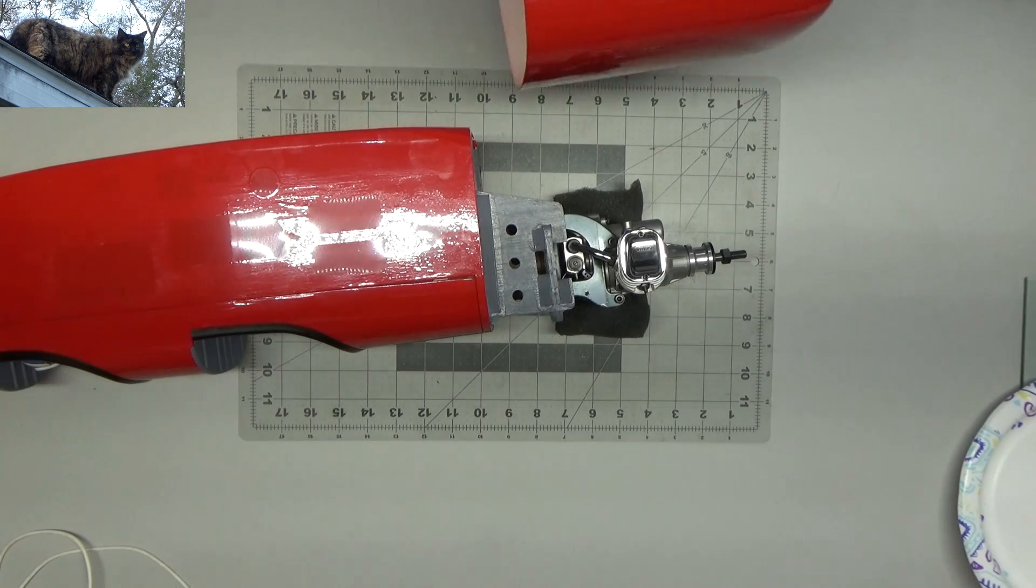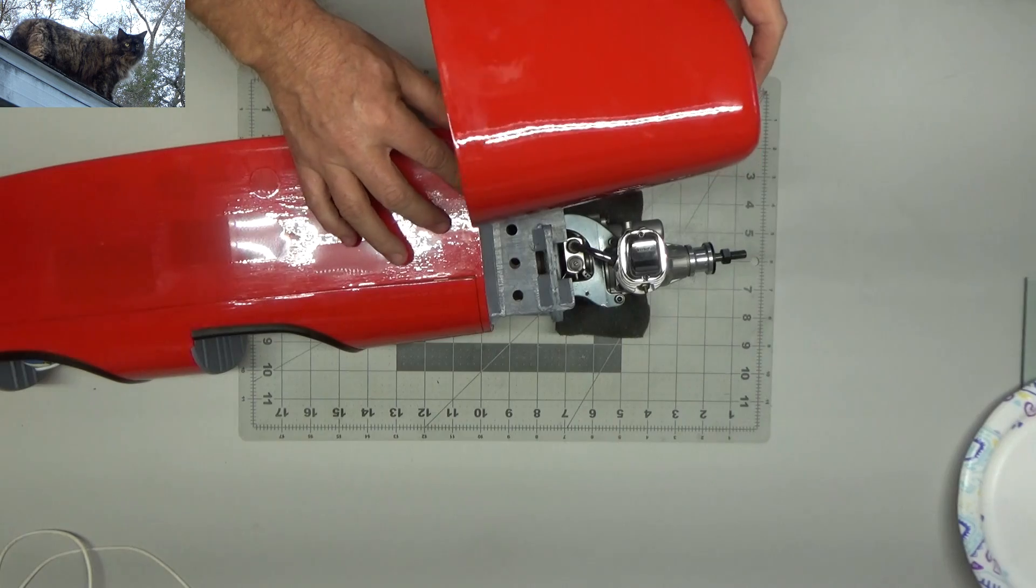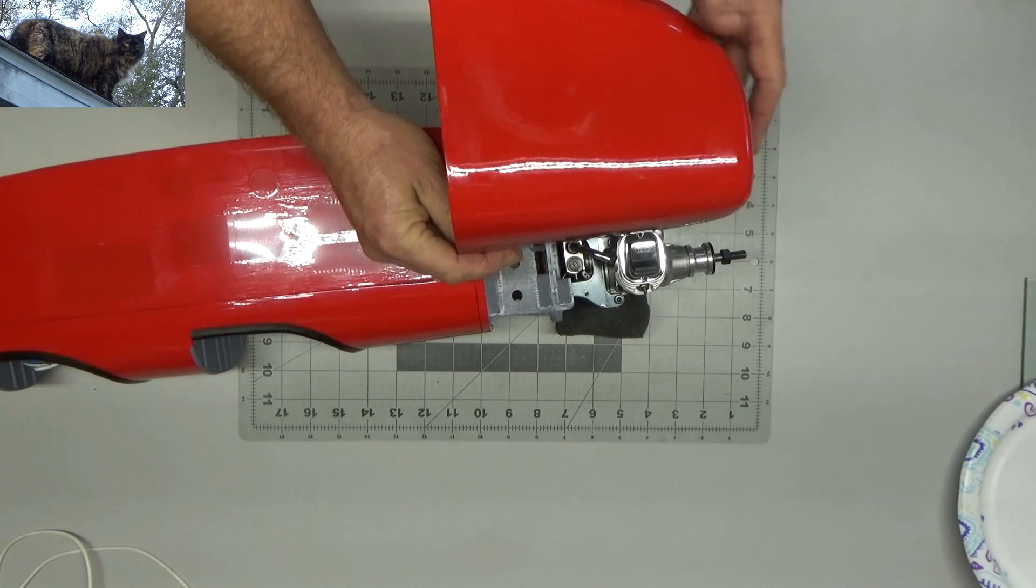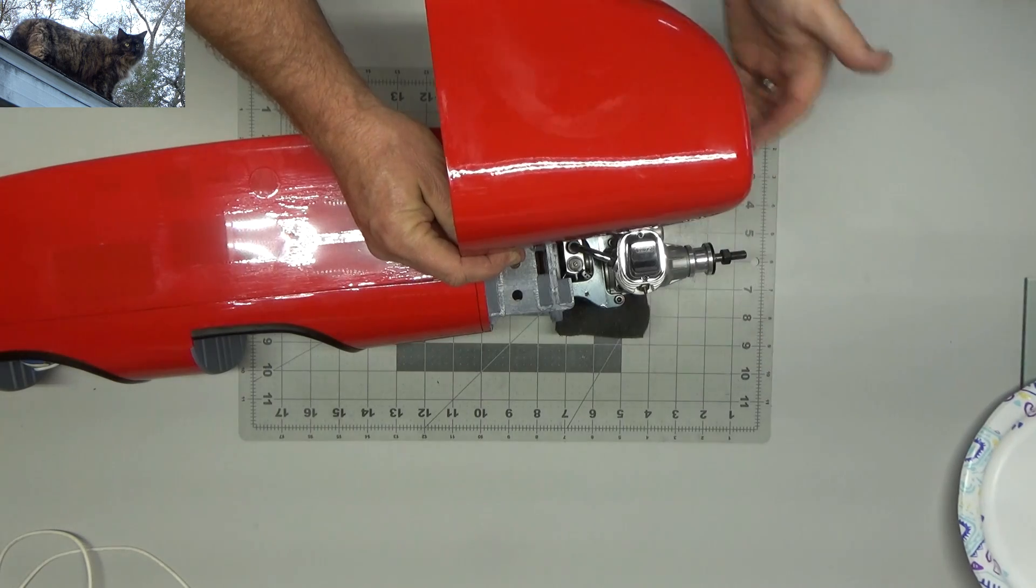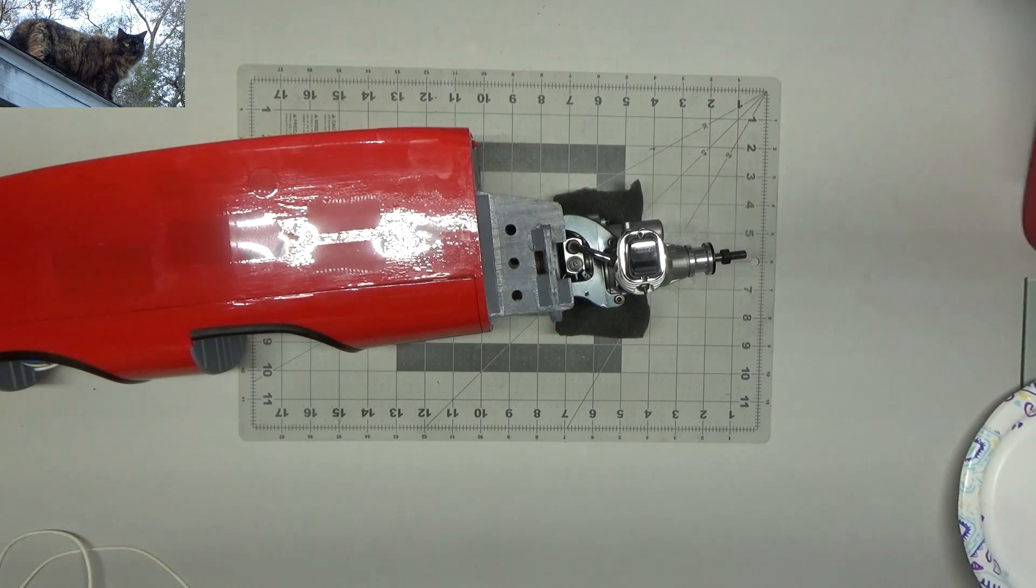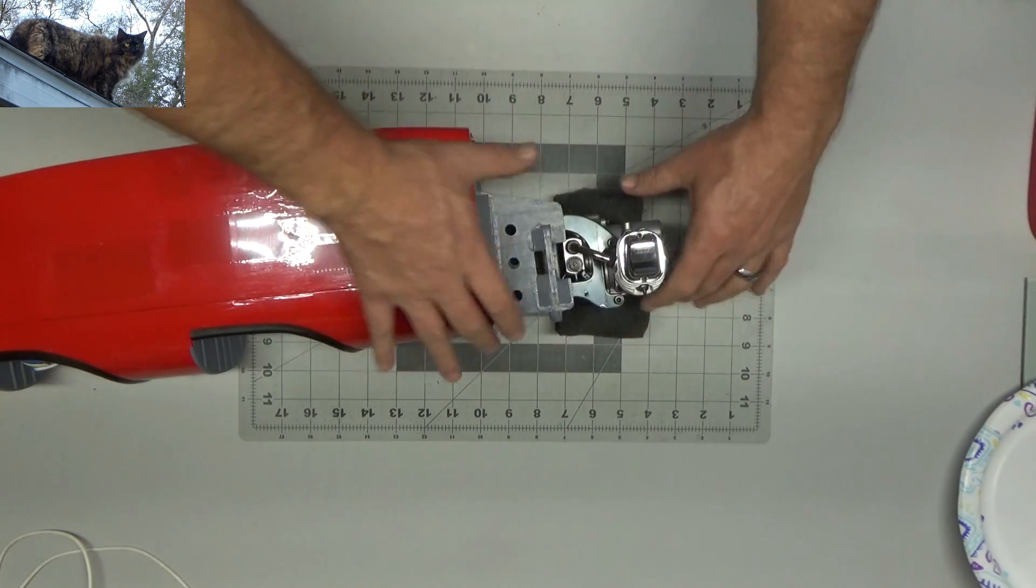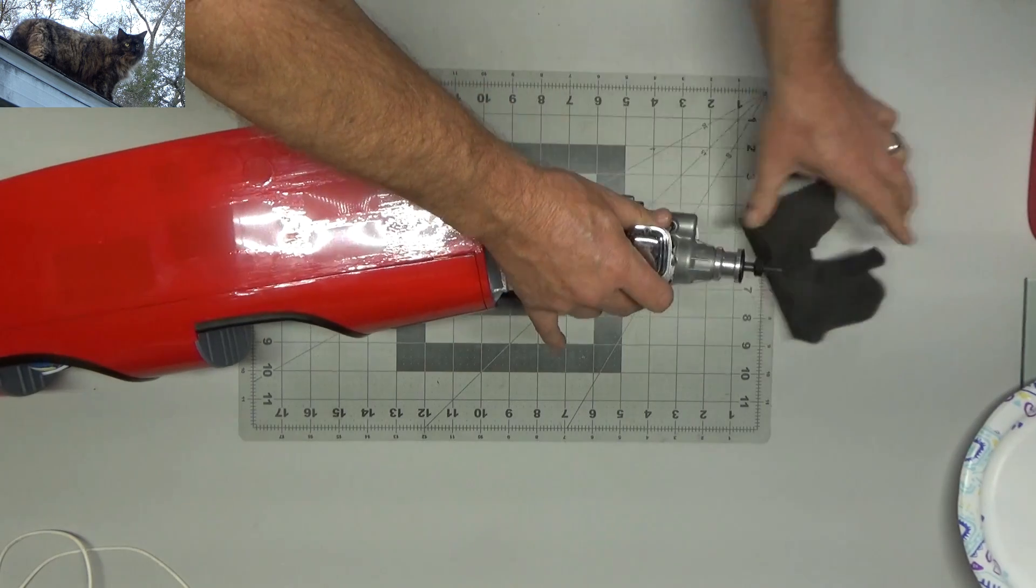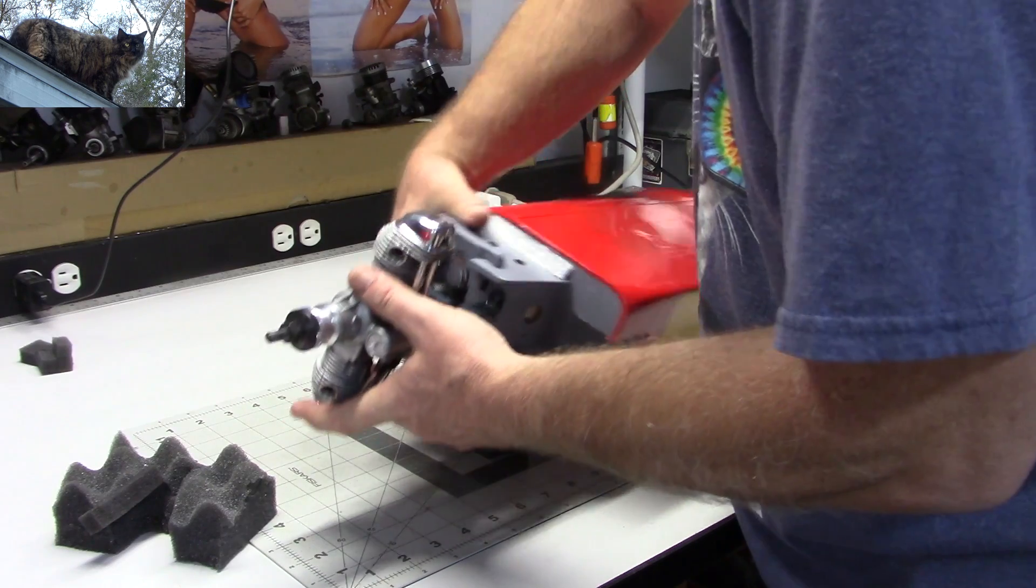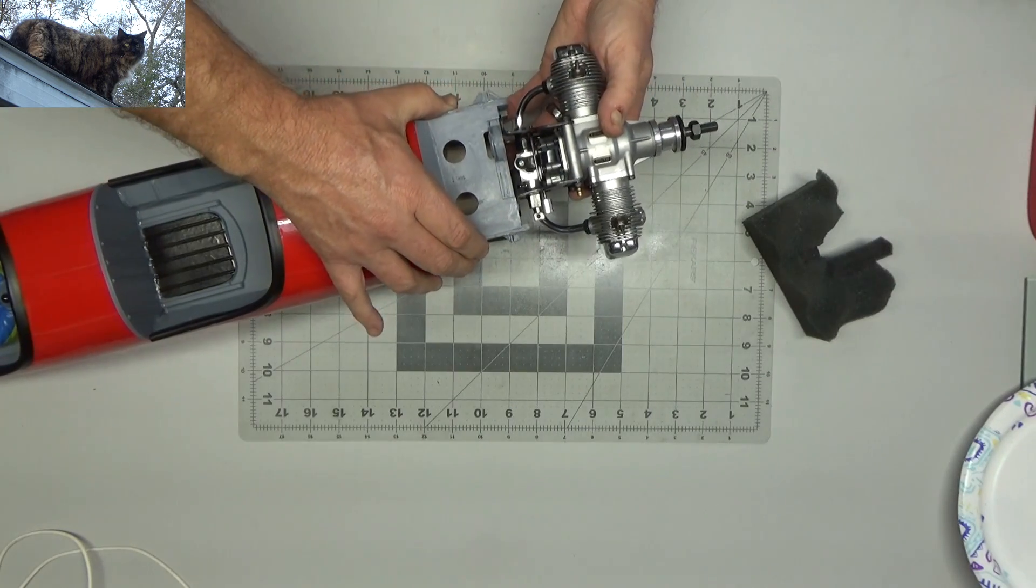Now, if I kind of lay it over here, that looks about right to me, eyeballing it like that. So with that said, it doesn't look like there's going to need to be any kind of real modifications at all to this. It looks like it's just going to be a matter of bolting this engine directly to the firewall.